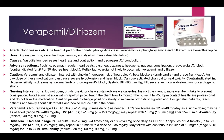Verapamil — the route and dosage is either PO or IV. Adults can take 80 to 120 mg three times a day; you may increase as needed. For diltiazem, the route and dosage is also by mouth or IV. There are extended-release forms for both verapamil and diltiazem. For diltiazem by mouth, adults can take 30 to 120 mg three to four times daily.